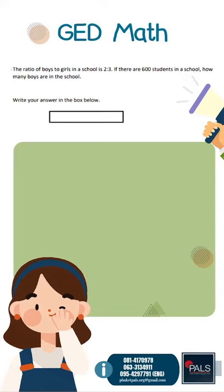Write your answer in the box below. So this is the total number of students — 600 — including boys and girls. The total is 600, so we need to compare with a total ratio. The total ratio is 5, because 2 plus 3 is 5. So we need to find 1 ratio unit.